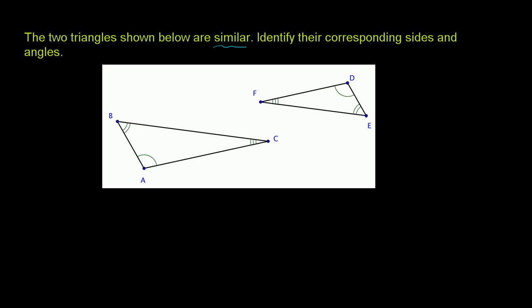So that's how we can identify which angles correspond to which other ones. For example, angle CAB corresponds to this angle over here, which we can call FDE. Corresponds to angle FDE.